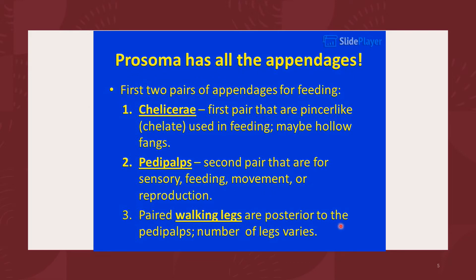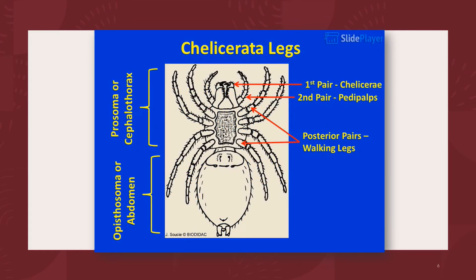We also have paired walking legs that are posterior to the pedipalps. Members of the subphylum Chelicerata have two main body parts: the prosoma, also known as the cephalothorax, and the opisthosoma, also known as the abdomen. The chelicerae tear apart food, and the pedipalps are modified for grabbing, killing, or reproducing. The second tagma, the opisthosoma, has no distinct appendages — only the spinnerets used to make silk, which are likely remnants of ancestral appendages.